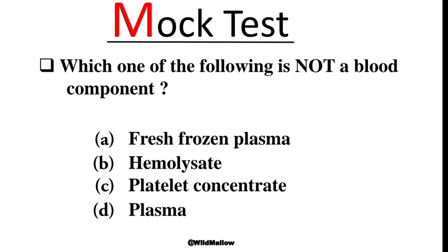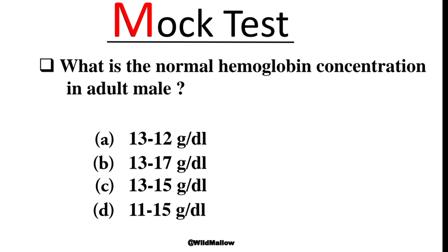Which one of the following is not a blood component? What is the normal hemoglobin concentration in adult male? 13-17 g/dL.